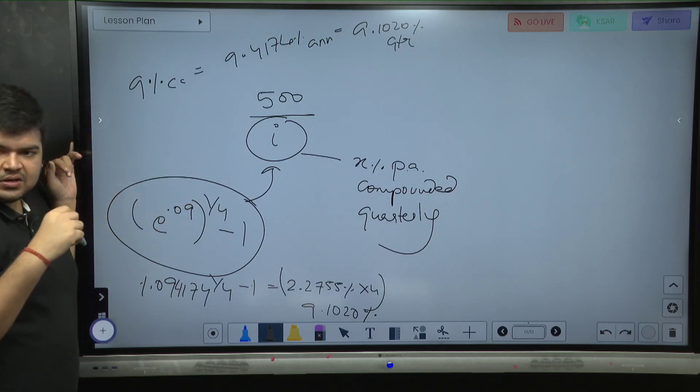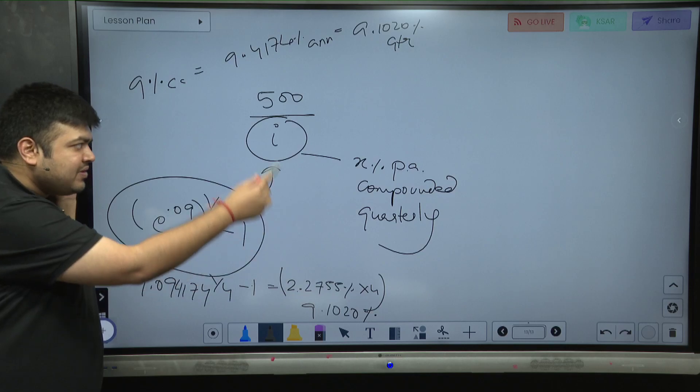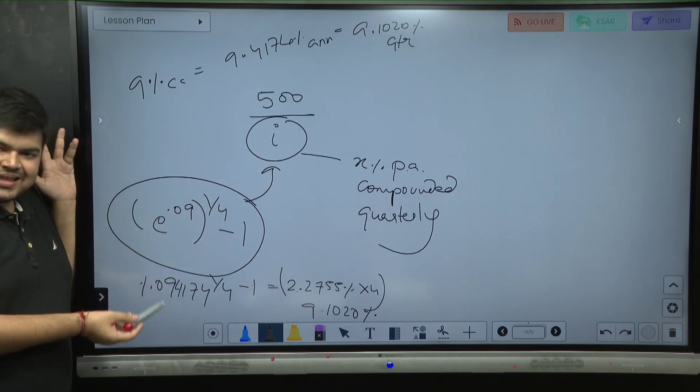What is the rate per period? So this is 9.1020 by 4 which is 2.2755. It is exactly that only.